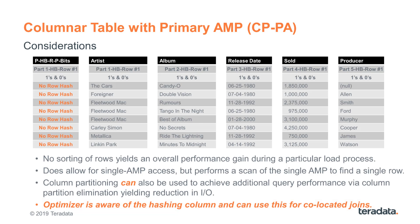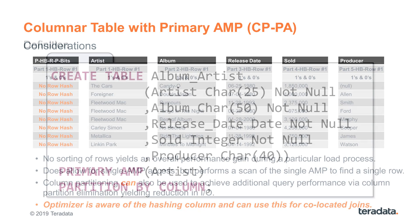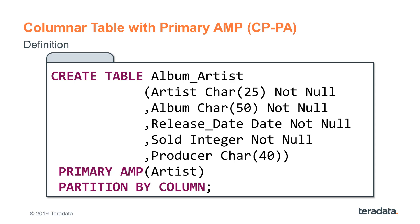So if you want to work with columnar tables, CPPA should be your first choice. With good partitioning it can get close to the same performance of a CPPI structure, avoiding the overhead associated with storing and sorting the hash. Here is the DDL definition for a columnar table with primary AMP. You see the primary AMP keyword. In this example we chose the artist column for hashing the data, but the row hash is not saved with each row, and we are partitioning it by column.